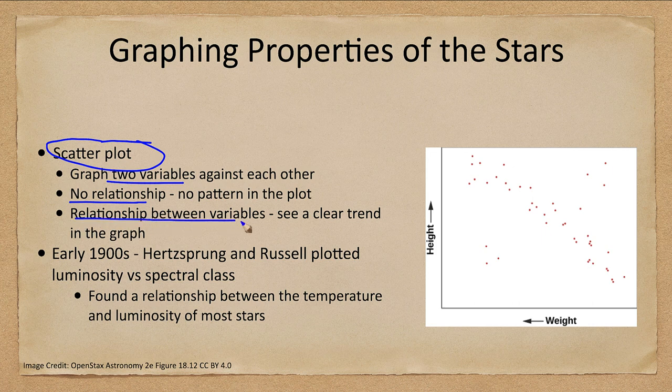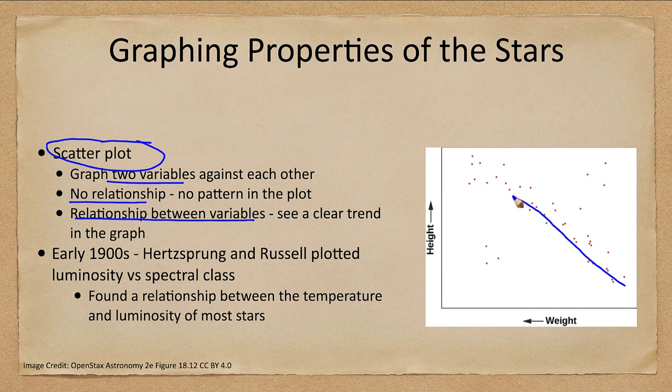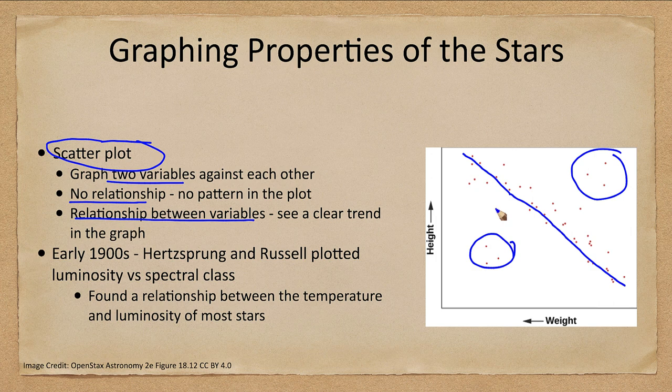If there is a relationship between variables, we see a clear trend in the graph and that's what you see here with weight and height. So there's definitely a trend that those who are taller tend to weigh more. Is it perfect? No, there are certainly some outlying points here. But overall, there is a general trend that we see between these.